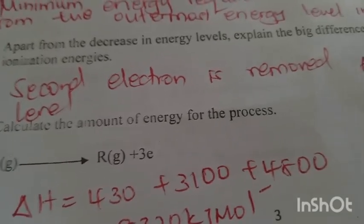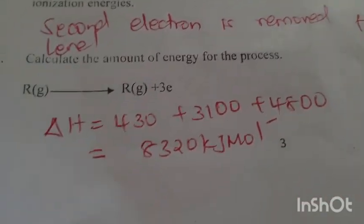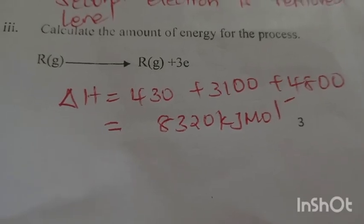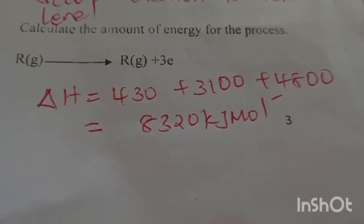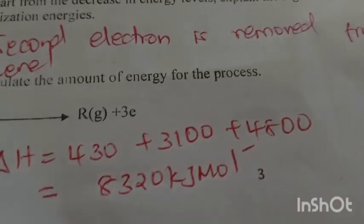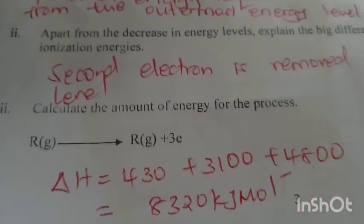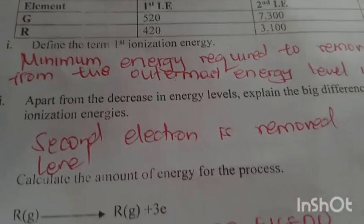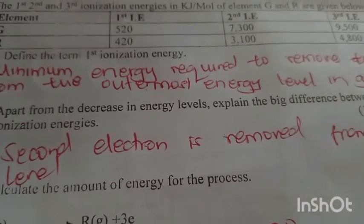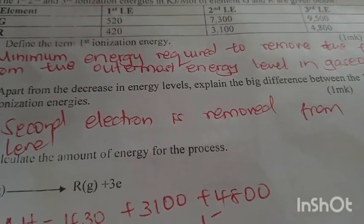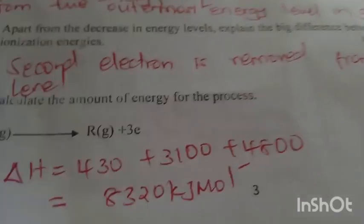Calculate the amount of energy for the process R changing into R3+ plus three electrons. The enthalpy change is 420 plus 3100 plus 4800, giving you 8320 kilojoules per mole.